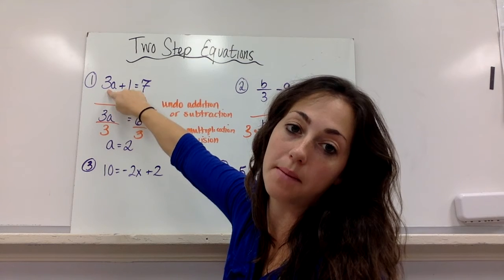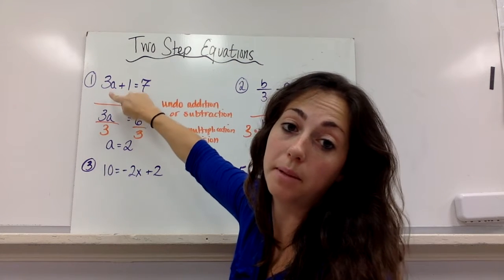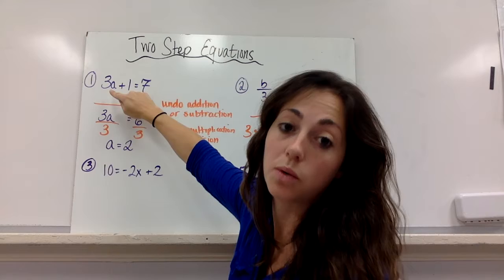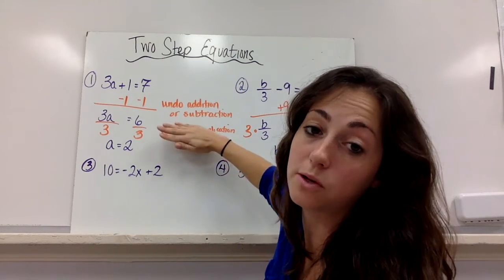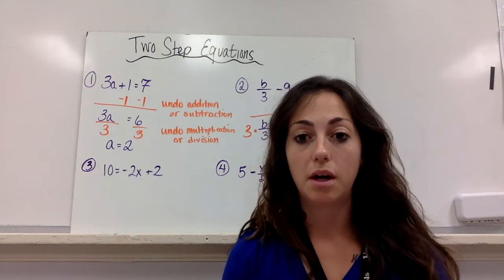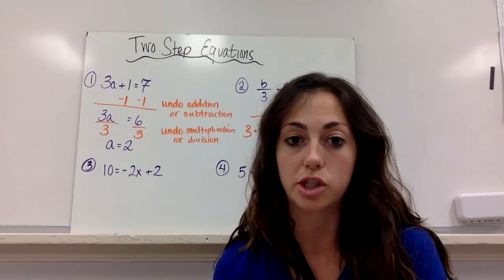We have number one, example one: 3a plus 1 equals 7. So our first step is always—it's two steps, so there's going to be two steps. Our first step, we need to undo either the addition or subtraction.